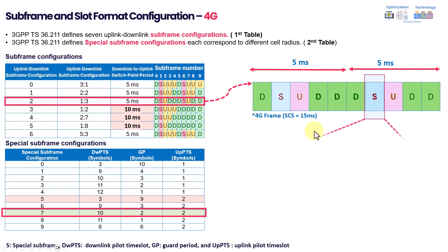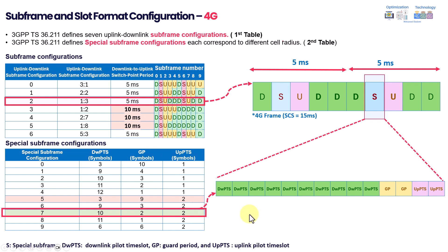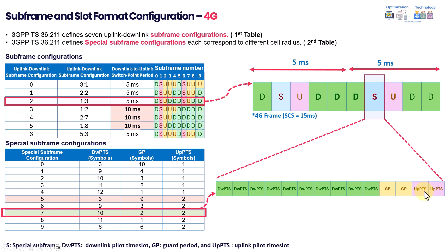As you can see here, this gives 10 for downlink, 2 for guardband, and 2 for uplink. Keep in mind that this configuration is fixed — once set in the network, it cannot be changed. The network will maintain this configuration and users will receive downlink or transmit uplink within these particular slots or symbols.